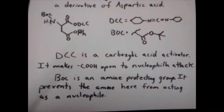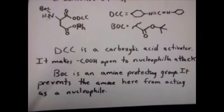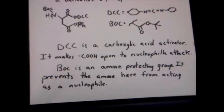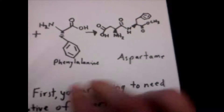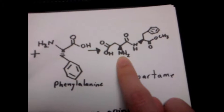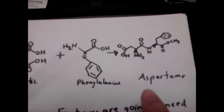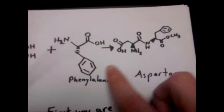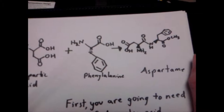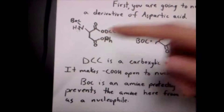DCC is a carboxylic acid activator — it makes the carboxylic acid group open to nucleophilic attack, because normally it would not be reactive to nucleophilic attack. The Boc group is an amine protecting group; it prevents the amine from acting as a nucleophile. It's important to prevent the aspartic acid derivative from acting as a nucleophile because in aspartame, the amine on the aspartic acid side must not have anything attached to it, while the phenylalanine — identifiable by its obvious phenyl ring — is going to be the nucleophile. The nitrogen attached to the phenylalanine group is bonded to the carbonyl of the aspartic acid derivative, so we know what our nucleophile is and what our electrophile must be.